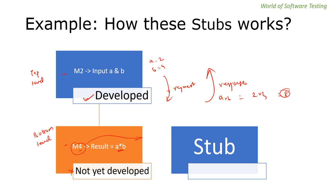To summarize stubs: m2 is the top level model, m4 is the bottom level model, and we want to test m2 which is developed while m4 is not yet developed. We use a stub as dummy or fake code in place of m4, used to test the top model m2. We pass inputs as a request from m2 to the stub, get the response, and do XML parsing comparison. If the response matches expectations, then m2 is working as expected.